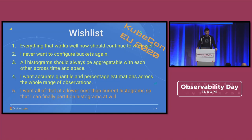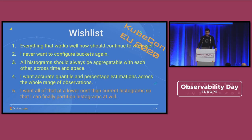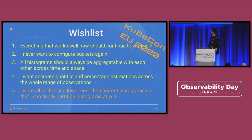This is a slide from KubeCon 2022 EU — though it was online, so not really EU. In that talk, I formulated wishes for what we want from native histograms. The yellow wishes, which was the conclusion, are all fulfilled by design now that native histograms are there. But the open question back then was the orange wish: I want all of that at a lower cost than current histograms so that I can finally partition histograms at will. This talk is about checking whether that wish has come true.